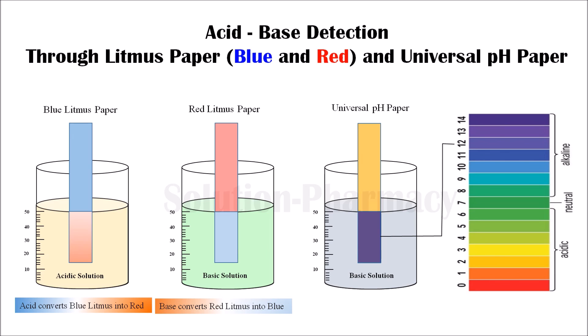So this is how we can determine the nature of our solution — whether it is acidic or basic — using blue and red litmus paper. By using universal pH paper we can determine the approximate pH value of the solution, as the solution changes the color of the pH paper according to its pH. This is the quick method to get the pH value of a solution. Thank you very much for watching this video.